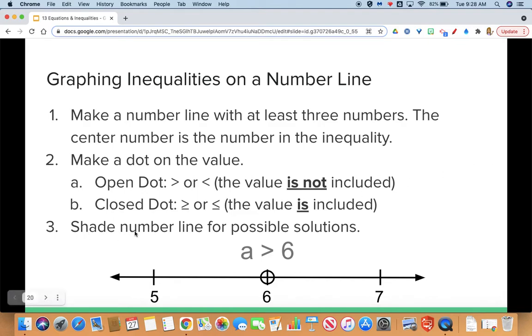Next we shade. Let's think about what our inequality is saying. The inequality says A is greater than 6. So which way would we shade for values that are greater than 6? We would shade up towards 7 and it's a number line so it's saying everything 7 and beyond would work to place in for A.